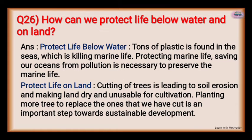How can we protect life below the water and on the land? For life below water: tons of plastic found in the seas is killing marine life — saving our oceans from pollution is necessary to preserve marine life. For life on land: cutting of trees is leading to soil erosion and making land dry and unusable for cultivation — planting more trees to replace those cut is an important step towards sustainable development.